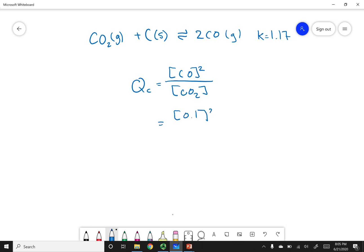I'm going to plug in my values, 0.1 squared, divided by 0.342. Now, if I do the mathematics to this, 0.029 is going to be my QC. Now, what we'll see is that QC is going to be less than my K value, or the K that I gave you.